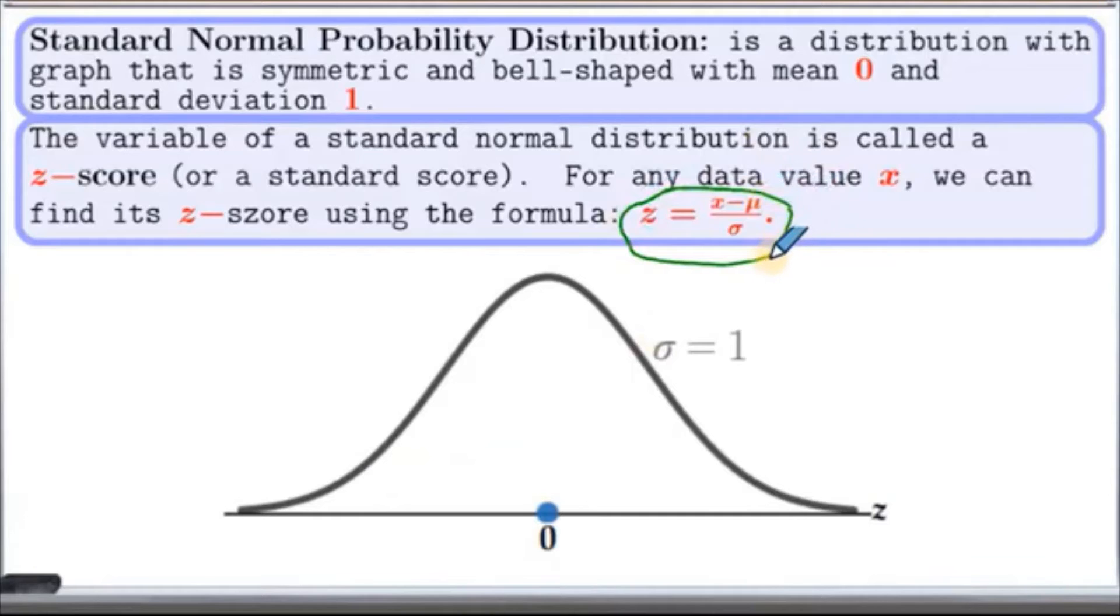Where mean, which is 0, is in middle, right here. And z-scores are on horizontal axis.